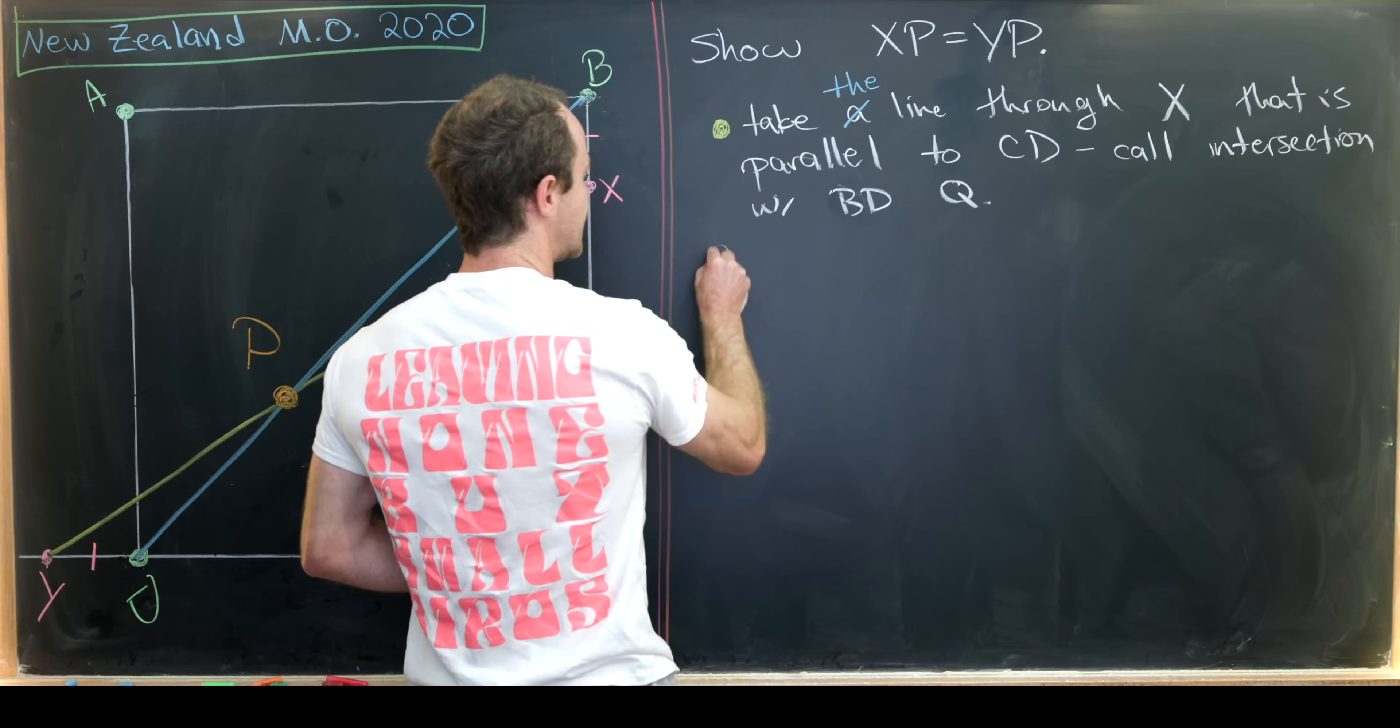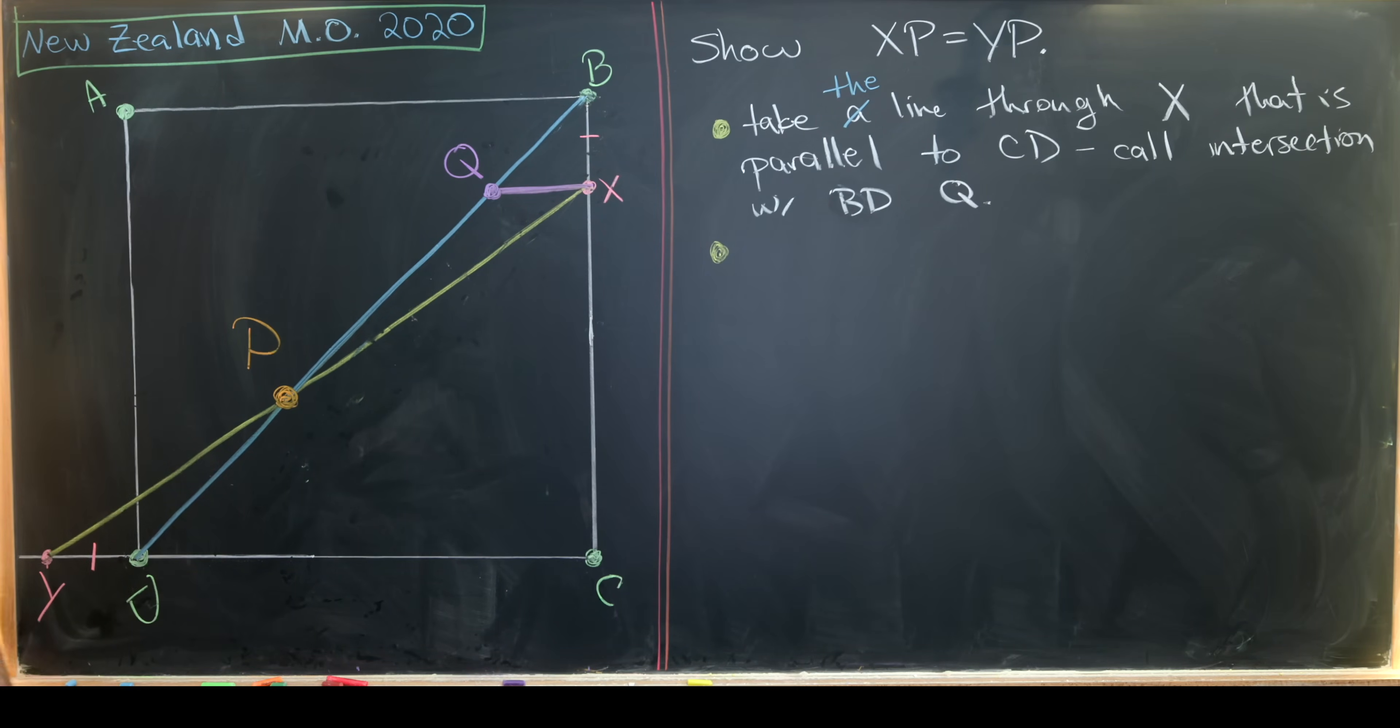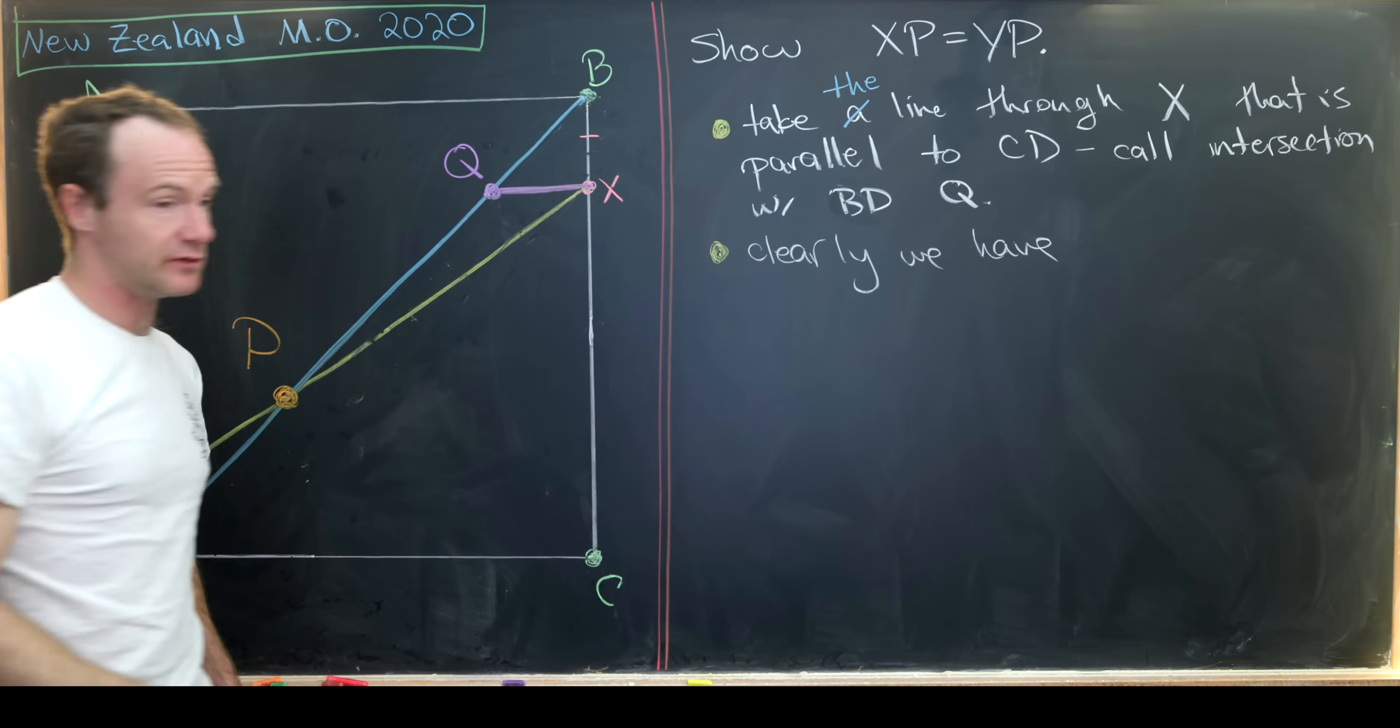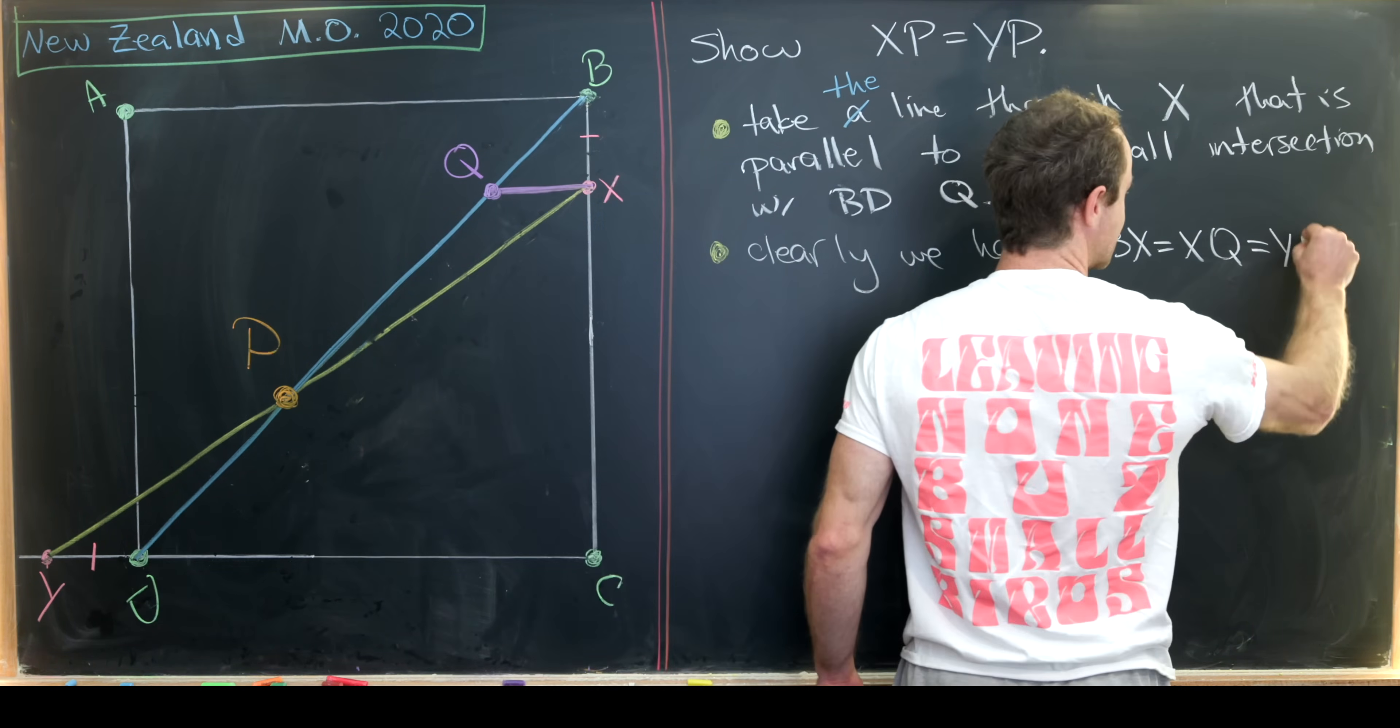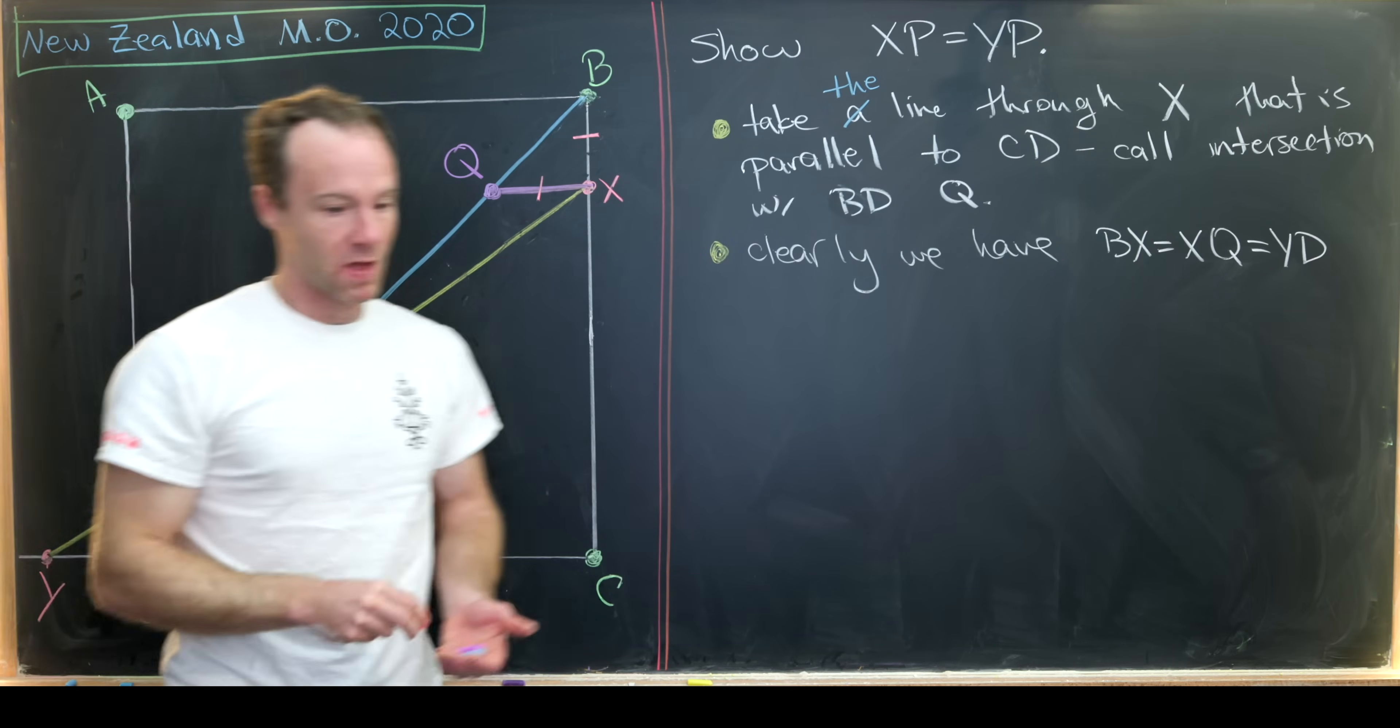But next, we can see that we have a 45 degree angle QBX. And that's because BD is the diagonal of a square, and so it bisects this 90 degree angle. So that means clearly we have this triangle BXQ is isosceles. But that means that BX is equal to XQ. But let's recall that BX is also equal to YD by our assumption. So I can put a little mark here to just indicate all of these are congruent line segments.